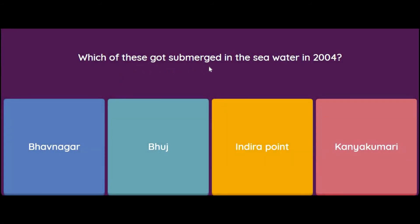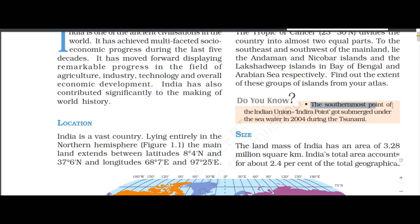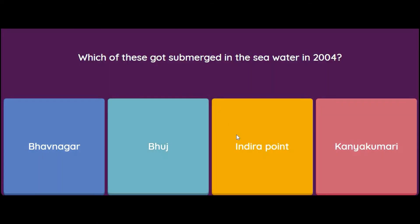Which of these got submerged in sea water in 2004? Options: Bhavnagar, Bhuj, Indira Point, and Kanyakumari. This is a very important question. The correct answer is Indira Point — the southernmost point of the Indian Union — which got submerged under sea water in 2004 during the tsunami.